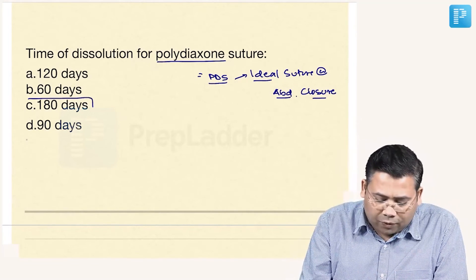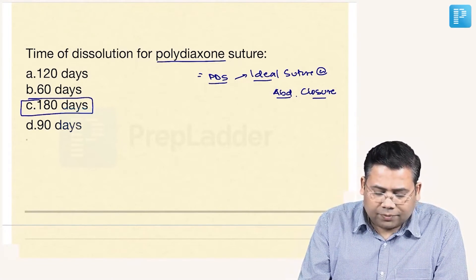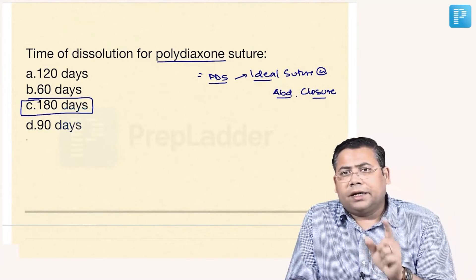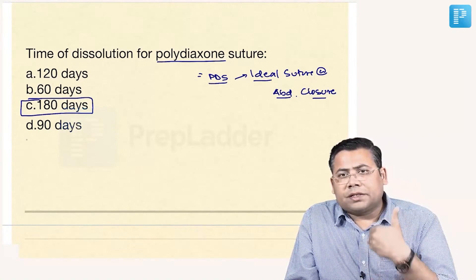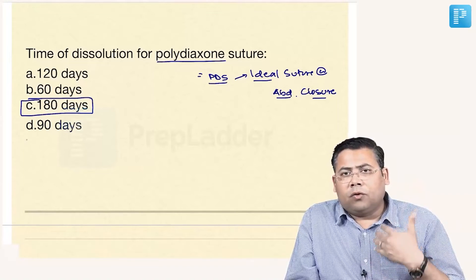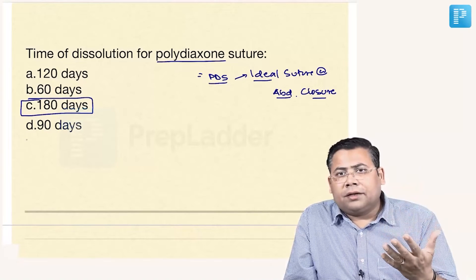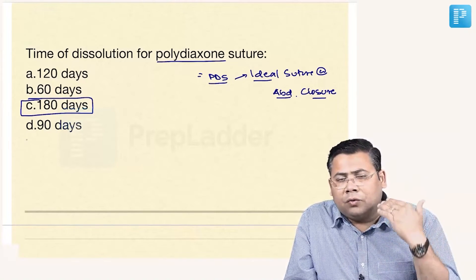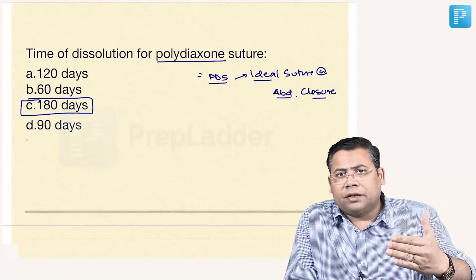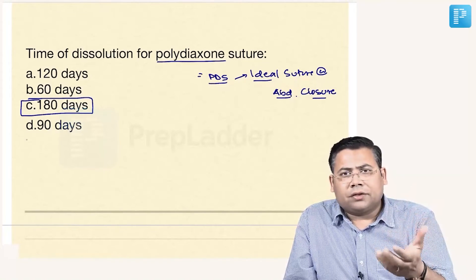180 days is the time of absorption and because it gets absorbed in 180 days it is ideally to be used because 6 months is the time taken by the abdominal wall or any muscular tissue to gain 90% of the strength and after that it has no use because no tissue will have 100% of the strength. Thus by that time it starts to dissolve.